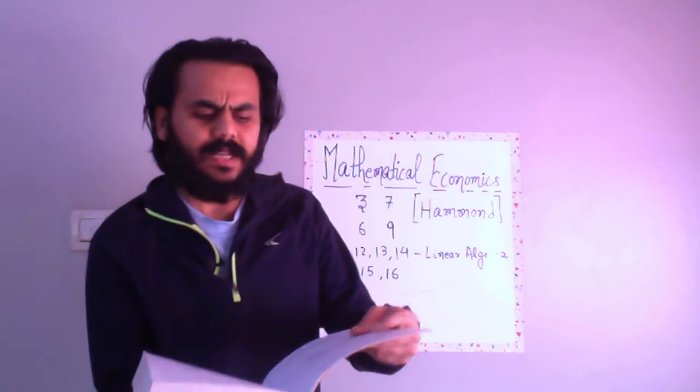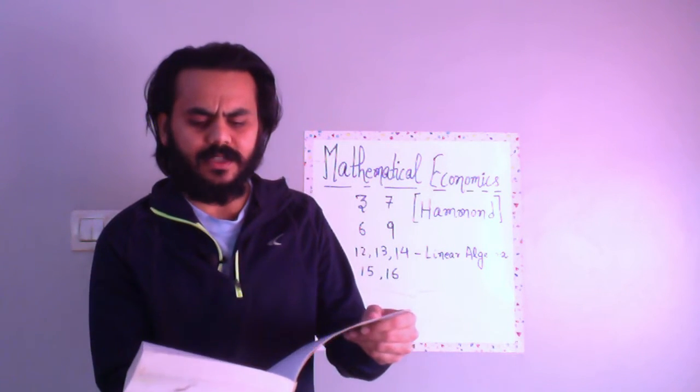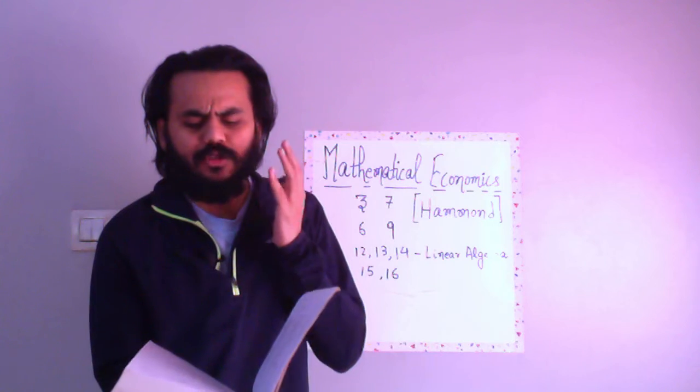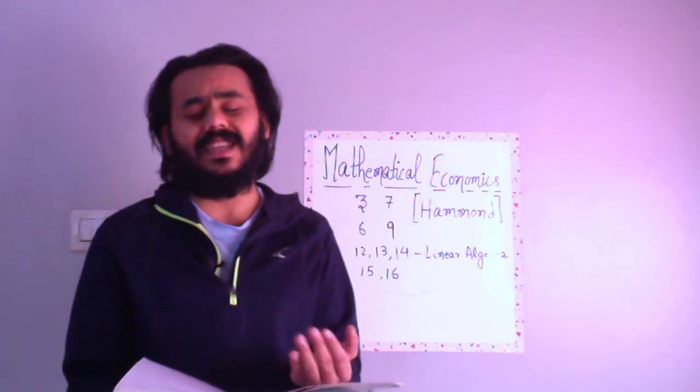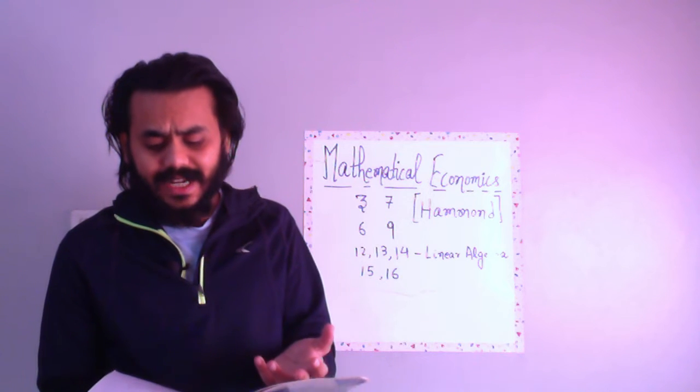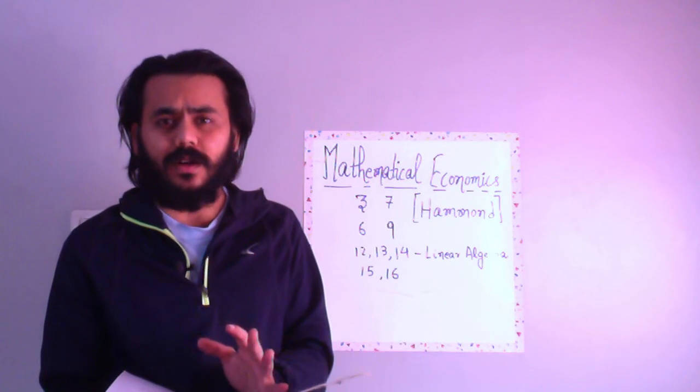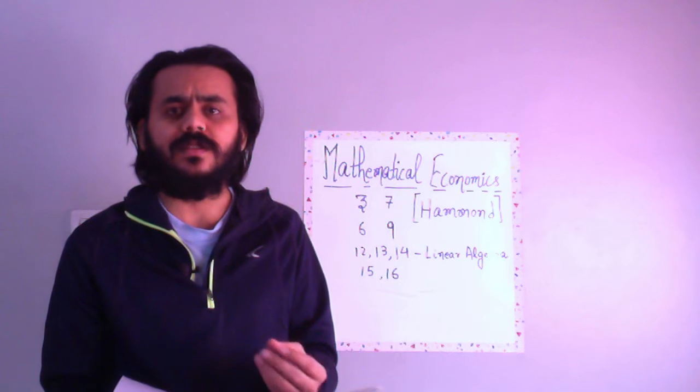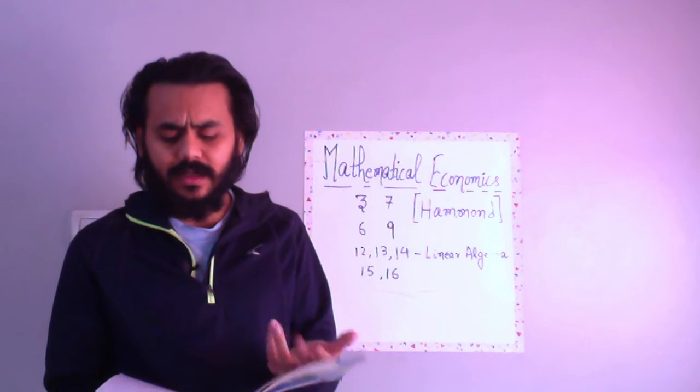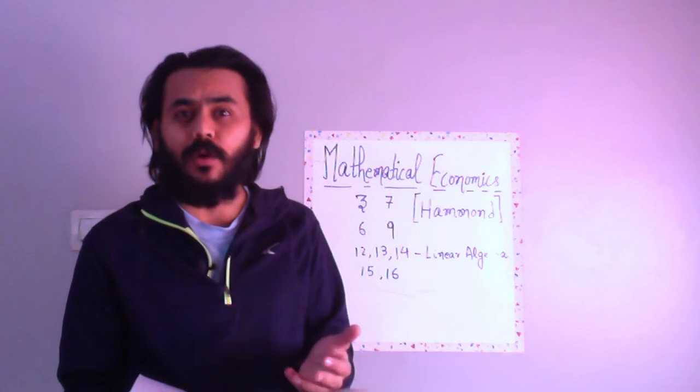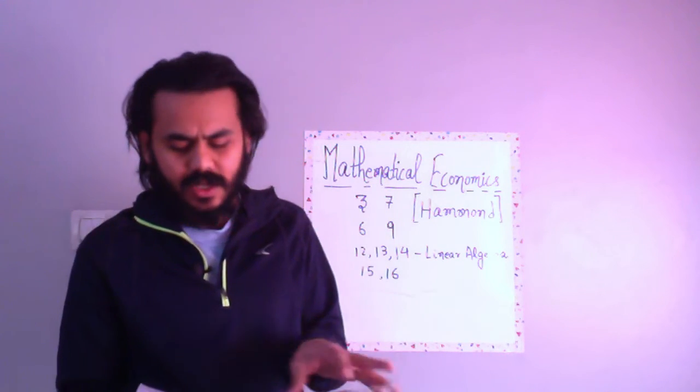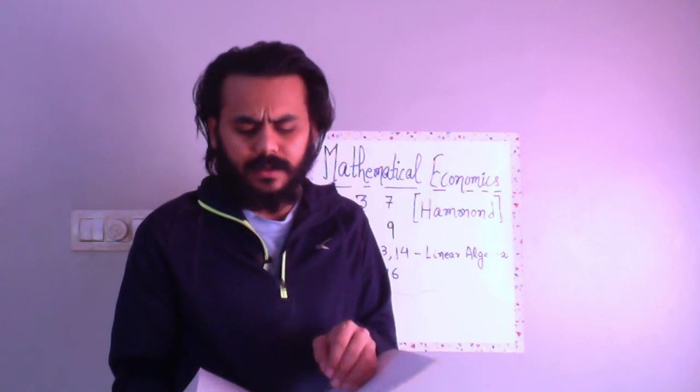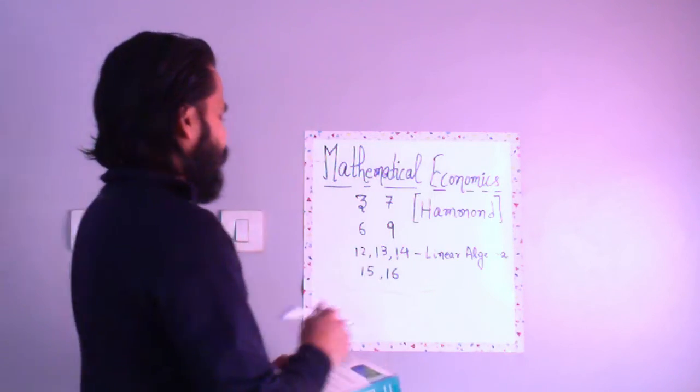Chapter seventeen is multiple variable optimization. This is not very different than single variable optimization, but there are nuances and conceptual understanding about quasi-concave functions, quasi-convex functions, concavity, convexity and how they are important in optimization for multivariable functions. This chapter is also very important.